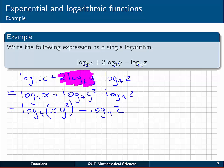Finally, I can combine those because the difference of logs is the log of a quotient. So we end up with just a single log base 4, xy squared all over z. And that's the answer to our problem.